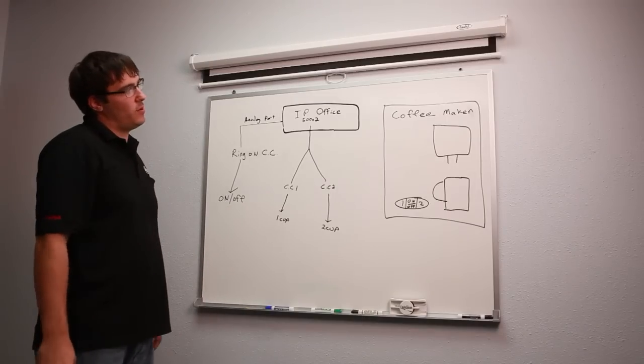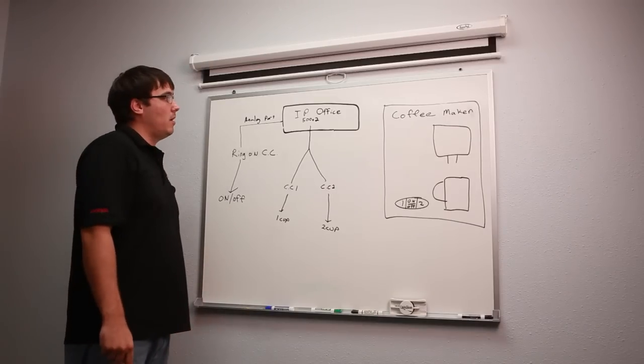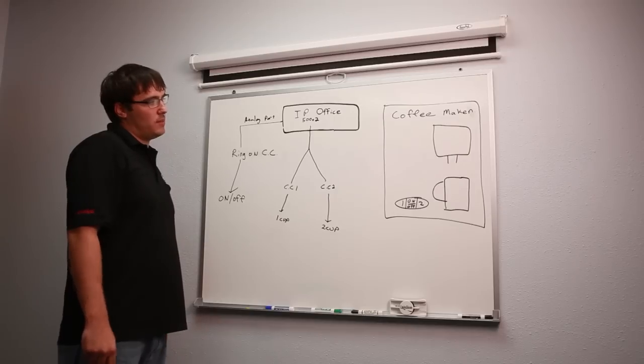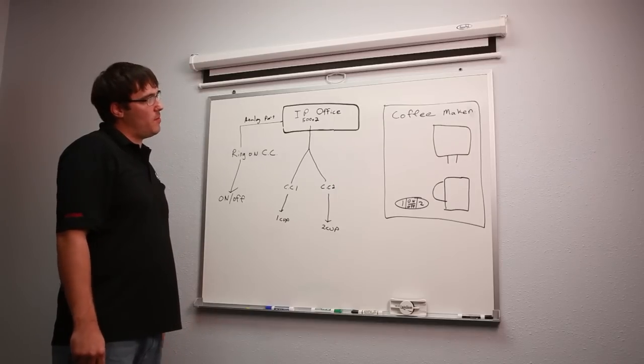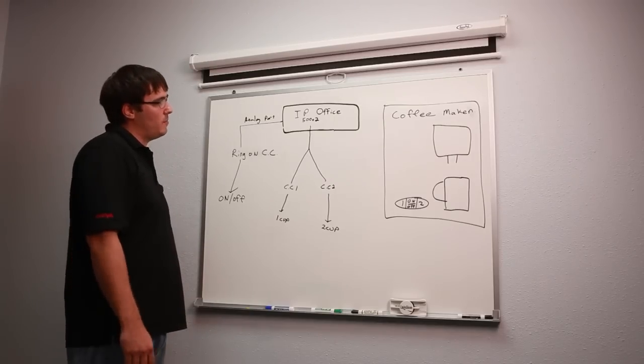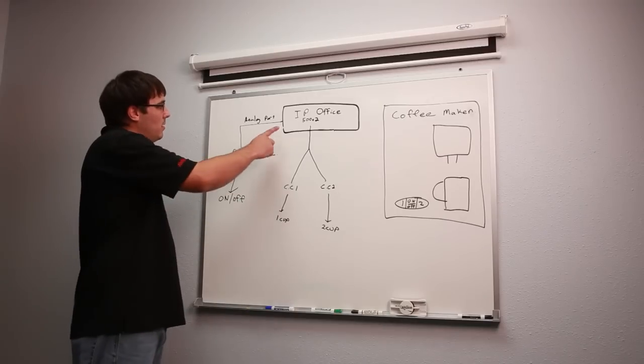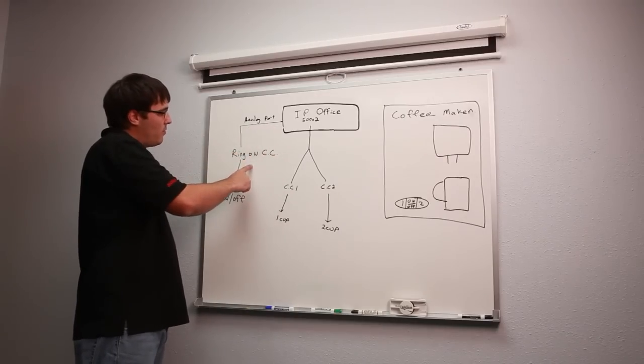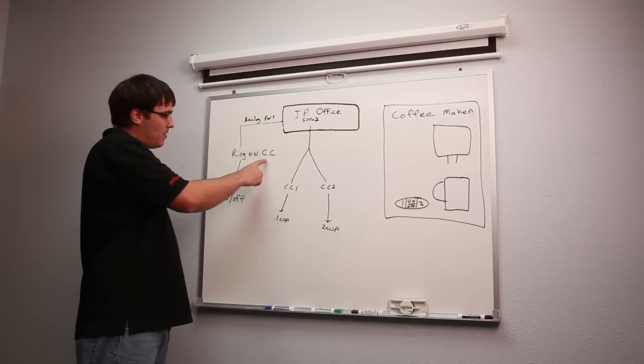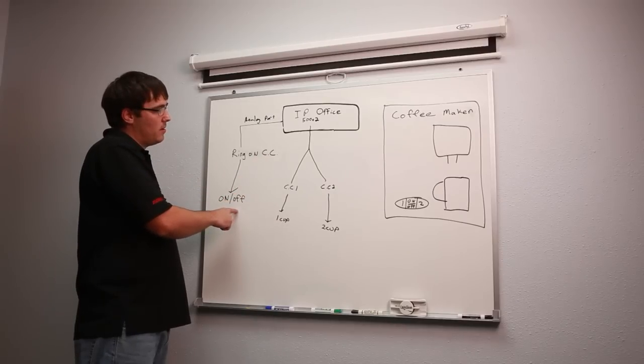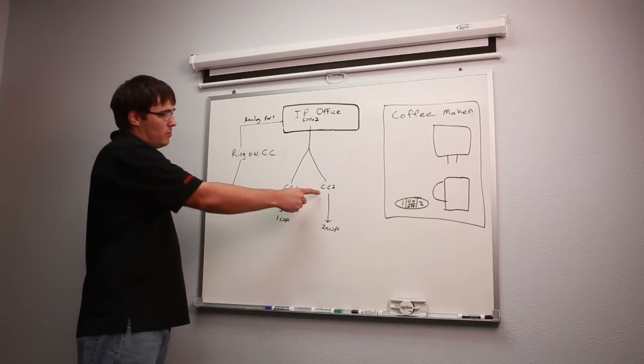The way we did it was we used Voicemail Pro. And the Voicemail Pro, when we dialed extension 299, a message would come on. You choose 1 cup or 2 cup, and as soon as you made your selection, it would then ring the analog port for 1 ring. It would give you your contact closure, which would turn the coffee maker on, then proceed to whichever one you chose, 1 or 2.